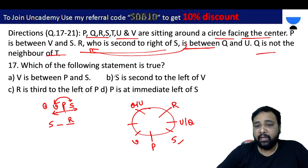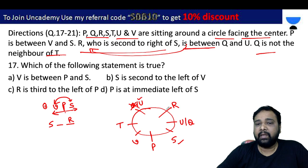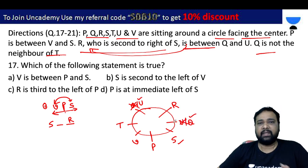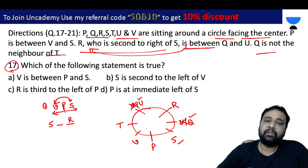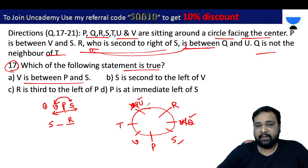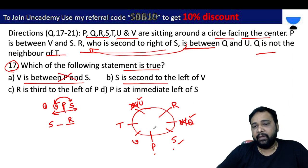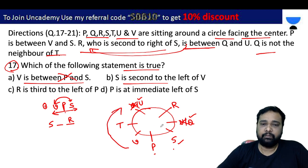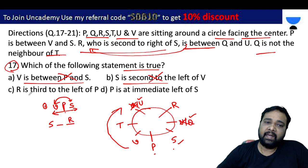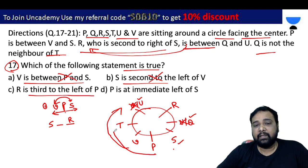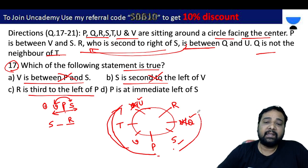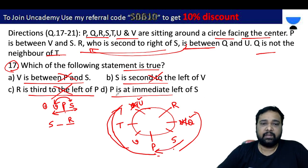Q is not the neighbor of T — T's neighbors are not Q. Working through the arrangement: which statement is true? P is at the immediate left of S — yes, correct. Our answer is D. Only option D is the right answer for problem number 17.